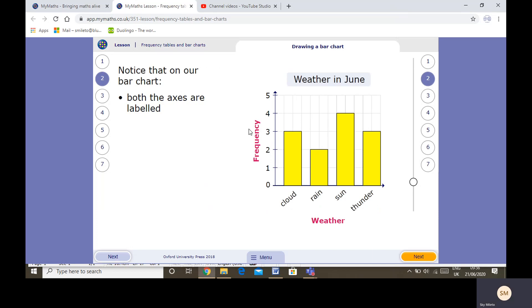So both axes are labelled as well as the title that we learned yesterday. It's also good to label what we call axes, the across and the up. This one is known as the x-axis which we've labelled weather. This one's the y-axis which is labelled frequency. And there's always a title.